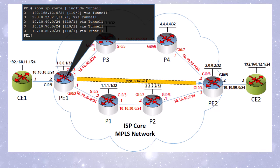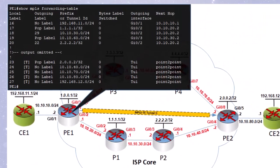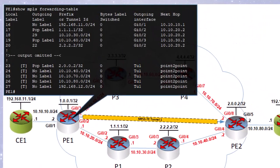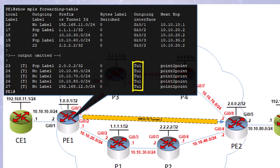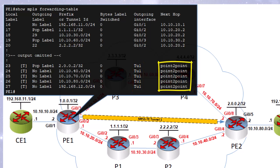Let's take a look at one more thing — PE1's MPLS forwarding table. Within it you can now see the labels that correspond to the new routes installed through the tunnel. You can clearly see the outgoing interface of tunnel 1 for all of these, as well as the point-to-point indicator for the next hop.